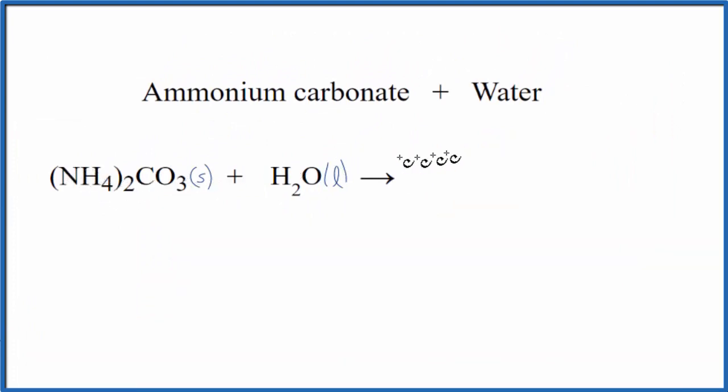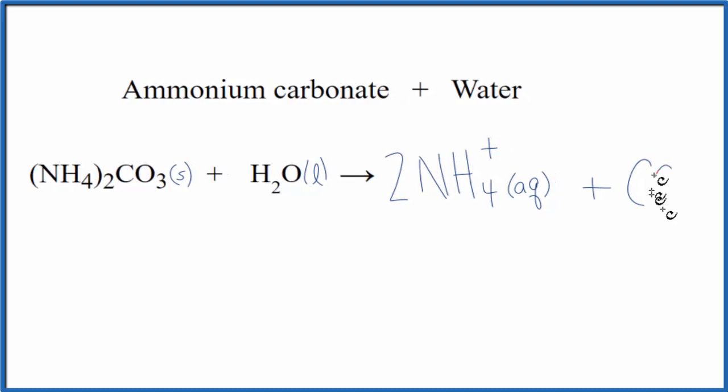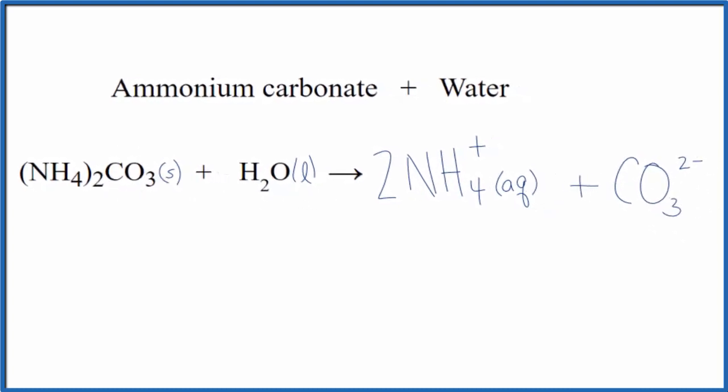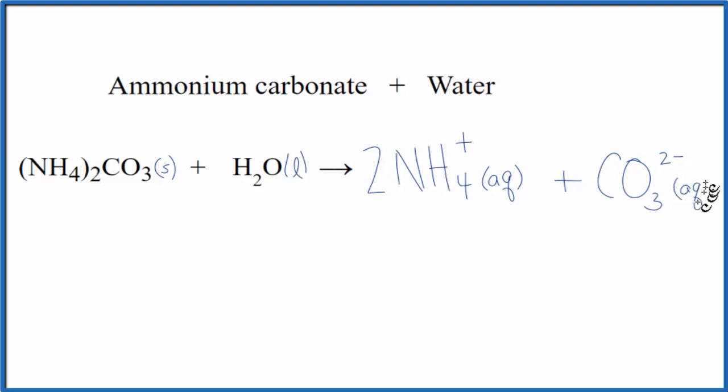So we have NH4, that's the ammonium ion, NH4 plus, but we've got two of them. So we put a coefficient of two in front. Now this is going to be dissolved in water. So we're going to write AQ for aqueous after it. That means dissolved in water. The carbonate, CO3, two minus, we have one of those, that will be aqueous as well.